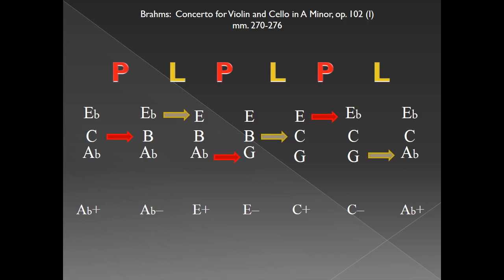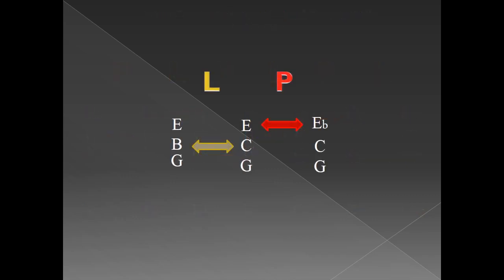I should take a brief moment to mention that these transformations also work in reverse. Just as L transforms a minor triad into its submediant, it also transforms a major triad into its mediant. That is, the clangs E minor and C major are L related in the same way C major and C minor are P related.